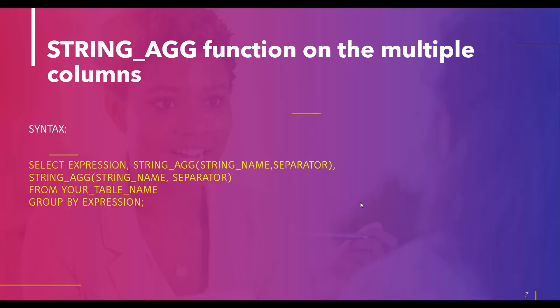Now we need to understand how to use STRING_AGG on multiple columns. According to SQL Server guidelines, there is no method to use two column parameters inside a single STRING_AGG call — that would give an error. If you want to use STRING_AGG on multiple columns, you have to write the STRING_AGG syntax separately for each column, then use GROUP BY or an aggregate reference after the table name.